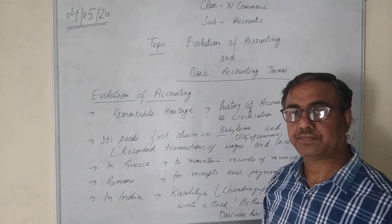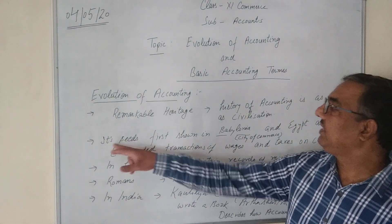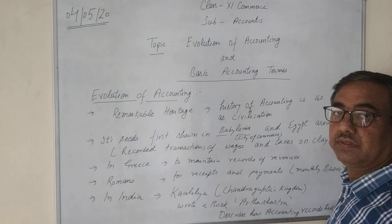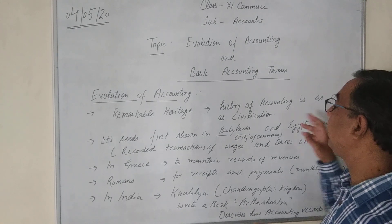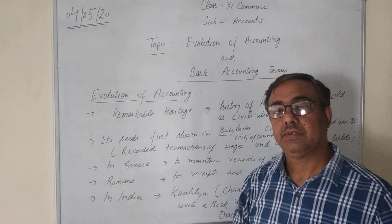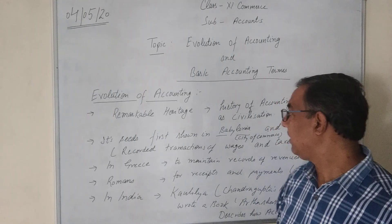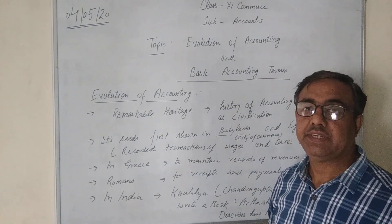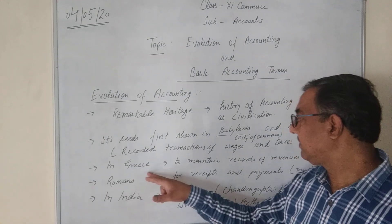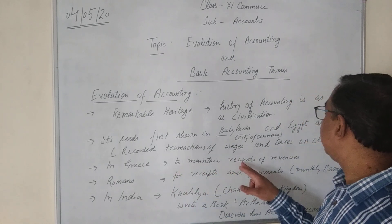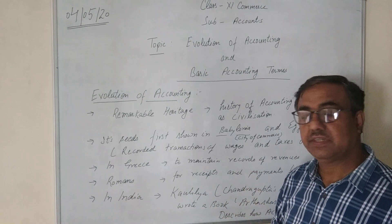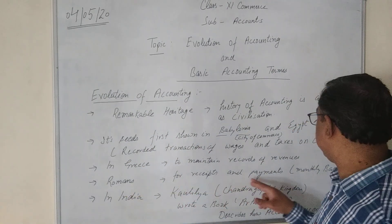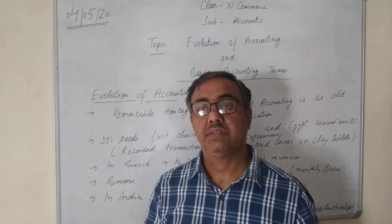We see the seeds of accounting first appearing in Babylonia and Egypt around 4000 BC. Babylonia was known as the city of commerce in those ancient times. In Greece, the accounting process was used to maintain records of revenue — taxes and revenues generated were recorded. Romans recorded receipts and payments on a monthly basis.